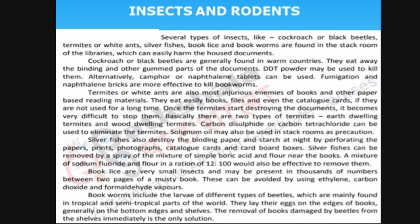Insects such as beetles, termites, ants, book lice, and bookworms will spoil the book — they stay in the book, eat the pages, and tear the pages. Termites are injurious enemies of books; they eat books, catalog cards, everything, and create holes. Silverfish can destroy bindings. If you search images for 'damage of book by silverfish' or 'damage of books by termites' in the internet, you will find good images.